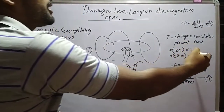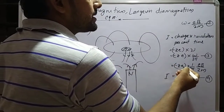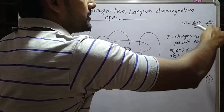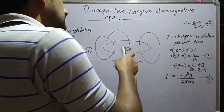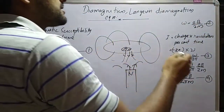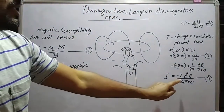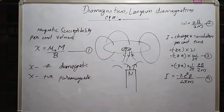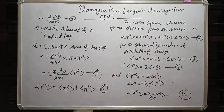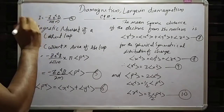The current is equal to minus Ze times omega over 2pi, since frequency nu equals omega over 2pi in terms of angular frequency. That equals minus Ze times 1 over 2pi. From equation 2, the angular frequency of electrons revolving around the nucleus is eB over 2m. Substituting, the current i equals minus Ze squared B over 4pi m. This is equation 4.